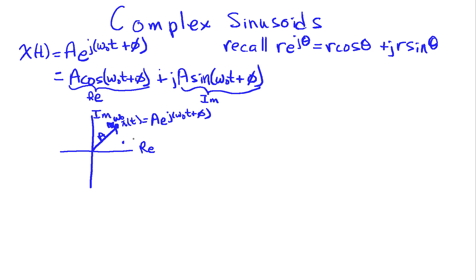X of zero has angle phi. That's how we think of this in the complex plane. If we graph the projections of this point on the real and imaginary axes, the projection on the real axis is going to be A cosine of omega-naught t plus phi, and the projection on the imaginary axis is going to be A sine of omega-naught t plus phi.